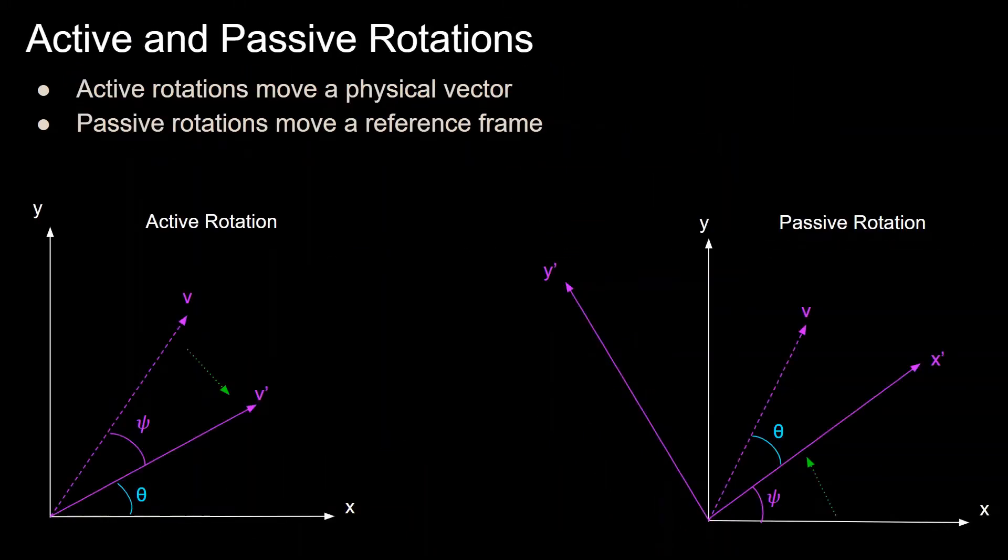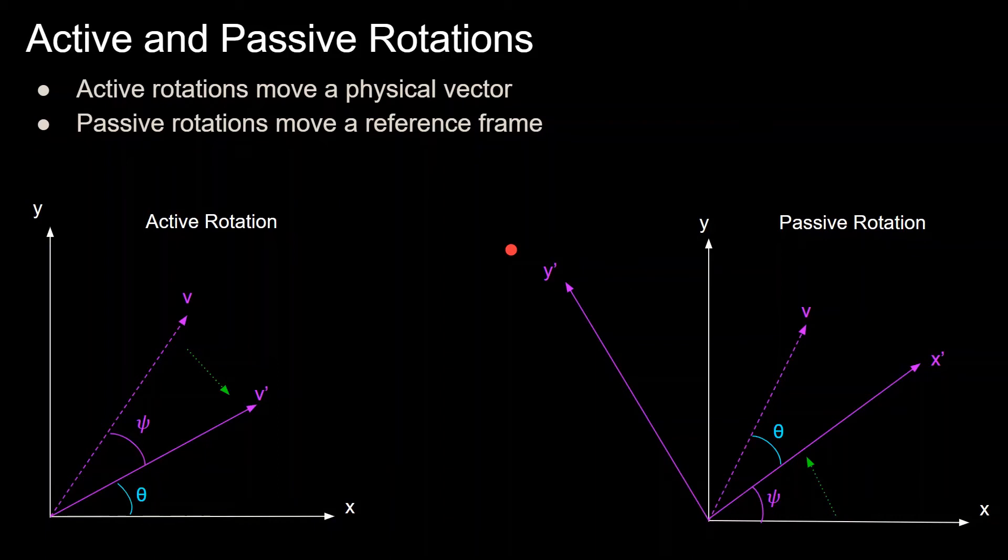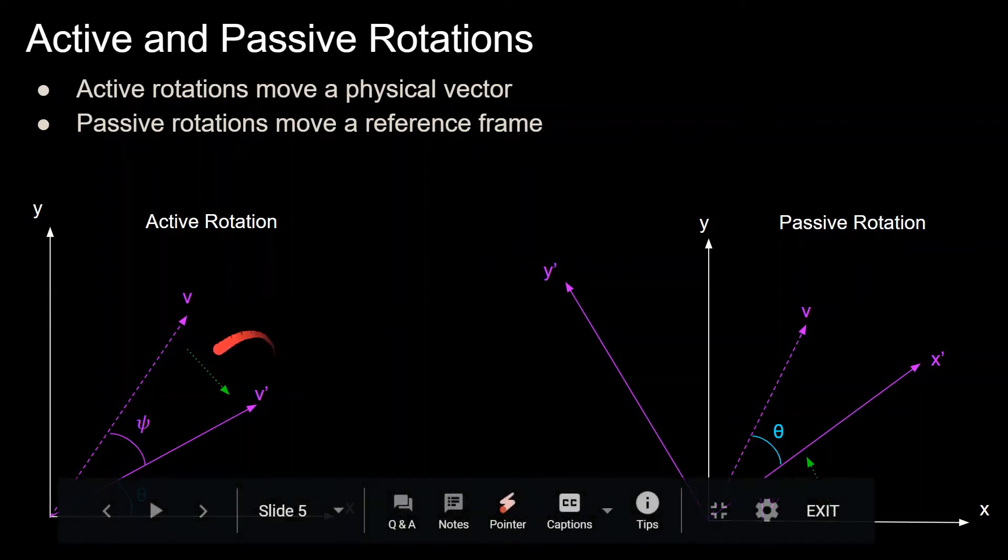Now rotation matrices can encode either active or passive rotations, where an active rotation is defined as rotating or moving a physical vector, where in this case this vector v is rotating to this vector v prime. Or they can be passive rotations where you move or rotate a reference frame, in this case where this x, y reference frame rotates upward to x prime and y prime. Now it's important to understand the difference of these two and what is going on. So on the left is an example of an active rotation of the vector v by the angle psi to the vector v prime. v rotates by psi to v prime.